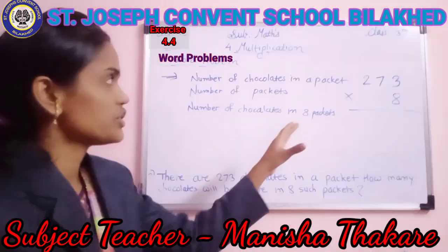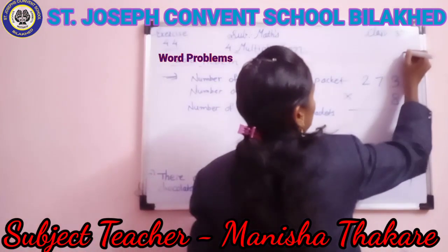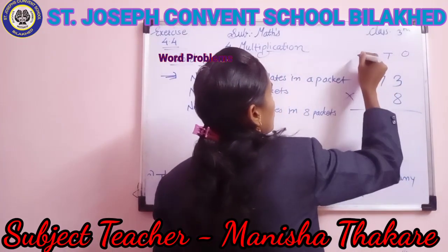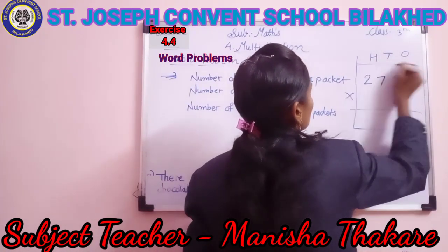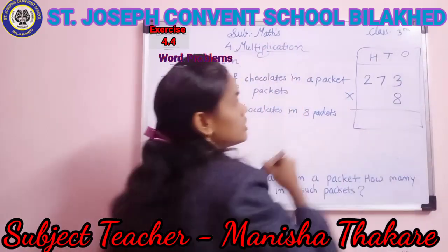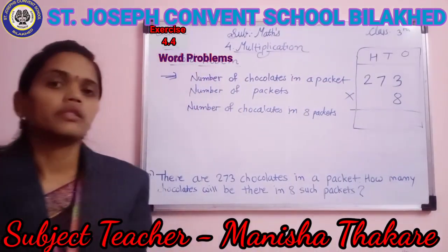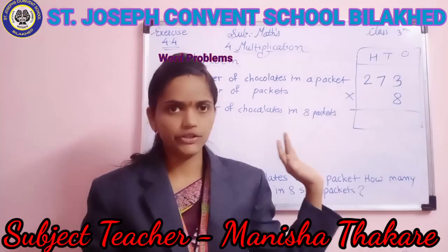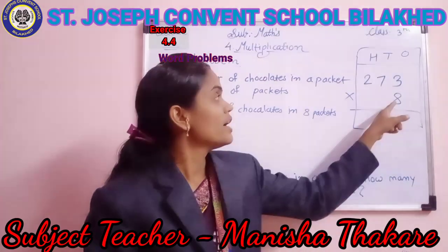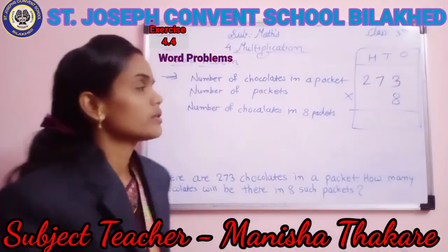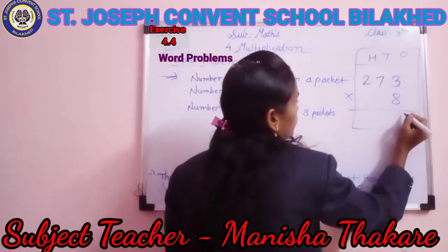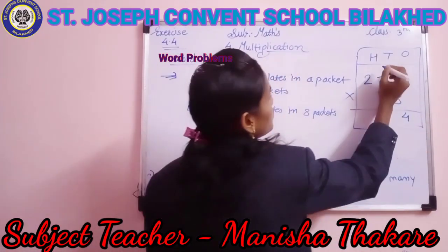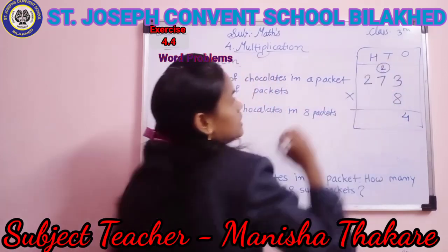We arrange in proper columns: ones place, tens place, hundreds place. We write 273 multiplied by 8. Eight 3s are 24. We write 4 in the ones place and 2 is carried over to the tens place.